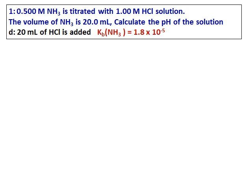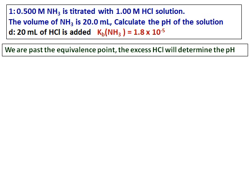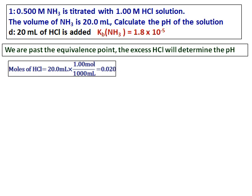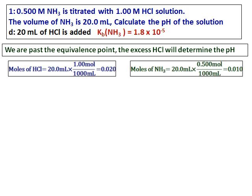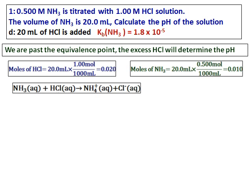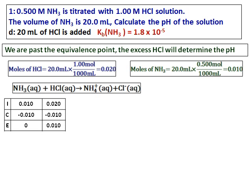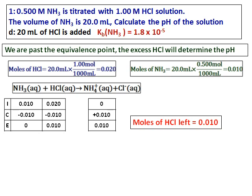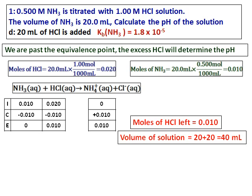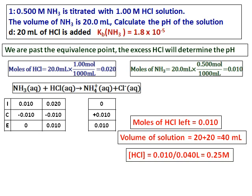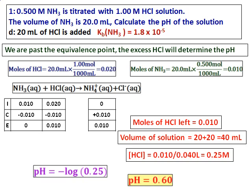For part D, I am adding 20 mL of hydrochloric acid — we are past the equivalence point. Therefore, the excess hydrochloric acid will determine the pH. Calculate the moles of hydrochloric acid and moles of ammonia. When you set up the ICE table for the ammonia–HCl equation, after ammonia reacts completely, I am left with 0.010 moles of HCl, and ammonium ions are also present. Convert the moles of HCl using the total volume to get the concentration of HCl.